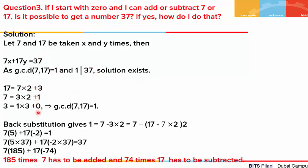We use the Euclidean algorithm and see that the GCD is 1. On doing back substitution, we get the linear combination 7×5 + 17×(−2) = 1. Now the right hand side for the original equation is 37, so we multiply these multiples by 37, giving us 7×185 + 17×(−74) = 37. So 7 is added 185 times and 17 is subtracted 74 times, and the total will be 37.